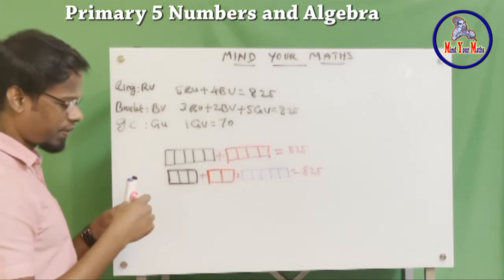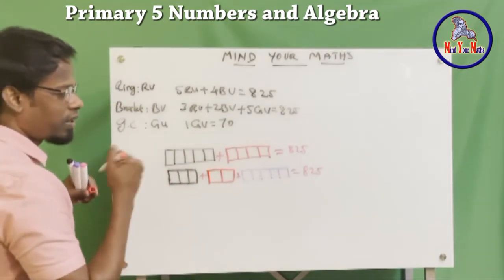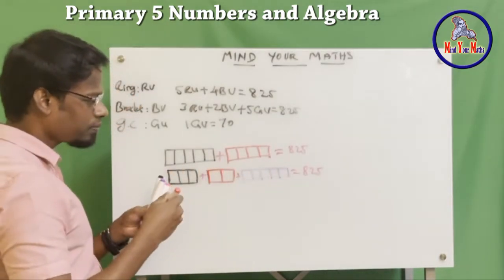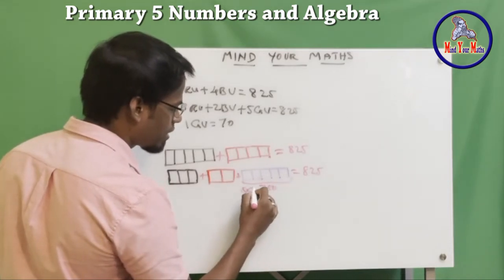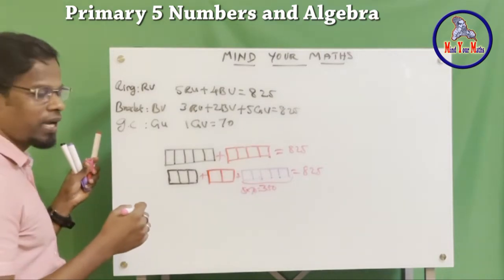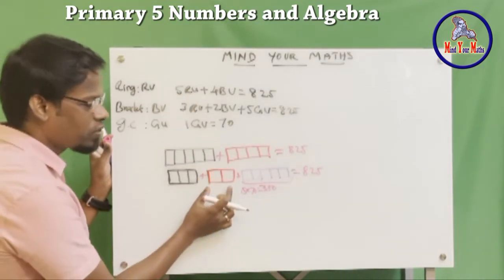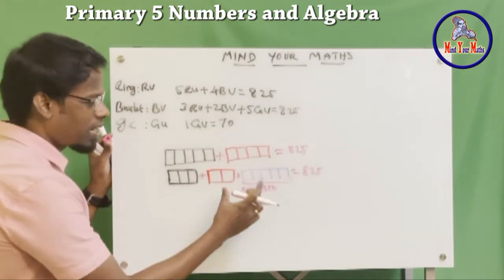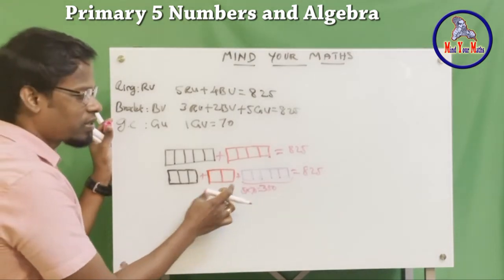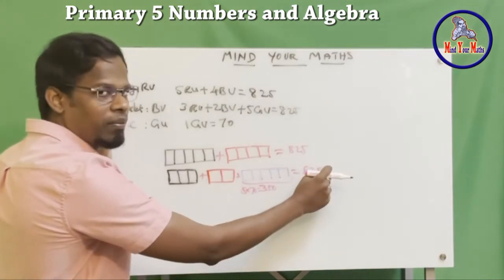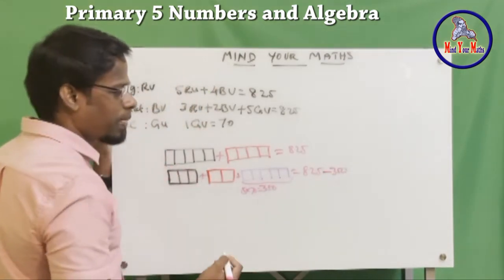Now we know the price of the gold unit. For five gold units, if each is $70, five times seventy equals $350. So the five gold units together are $350. Now from this diagram, I want to find only the price of the three ring units and the two bracelet units. If you subtract $350 from $825, you will find that price — we are removing the gold chain portion from the equation.